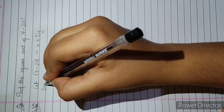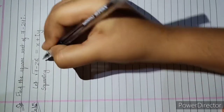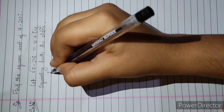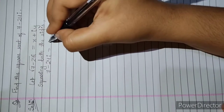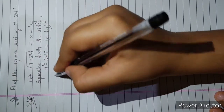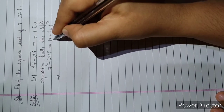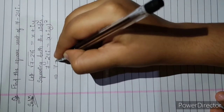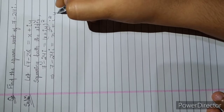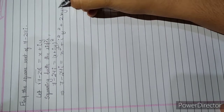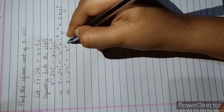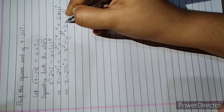Now we have to square both sides. Squaring both sides, we get 7 minus 24i is equal to x plus iy whole squared. We split this: 7 minus 24i equals x squared plus i squared y squared plus 2xyi, which gives us x squared minus y squared plus 2xyi.